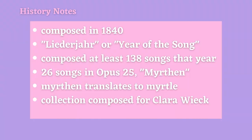Die Lotusblume was composed by Robert Schumann in 1840. Now 1840 is known as Schumann's Liederjahr, or year of the song, and it was during this year that he composed at least 138 songs. When you think about it, it means he averaged writing two and a half songs per day for an entire year, which is just incredible.